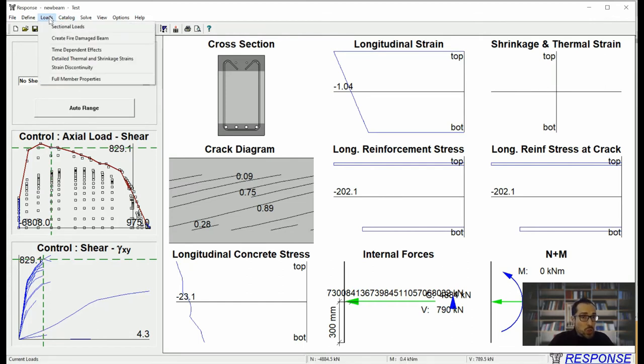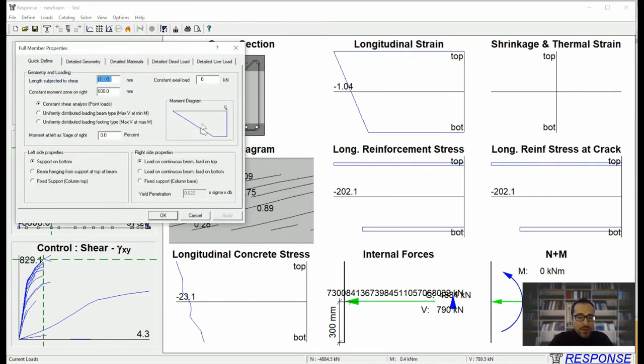You can also do full member design. So if you have a beam analysis, it's very useful. You can consider a beam. This is half of it. It has to be symmetrical, or you can idealize it as symmetrical. You can input the load types. This is the moment diagram. You can input support conditions on the left, on the right. Length subject to shear is the distance between your support as well as the point load application point or mid-span if you have a UDL.